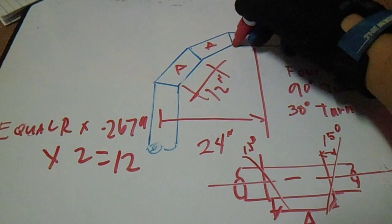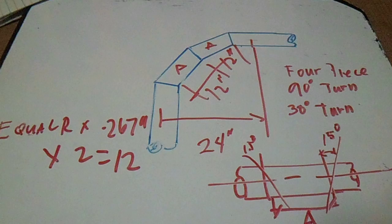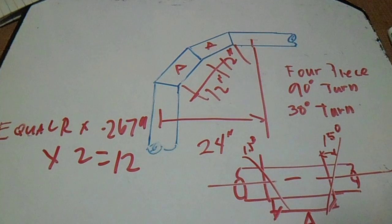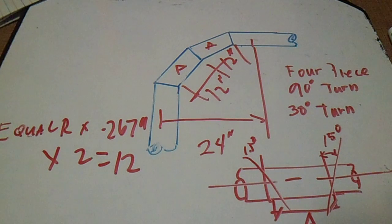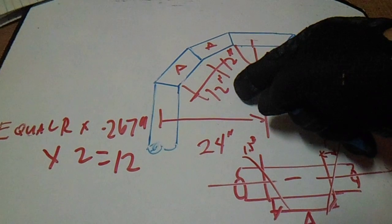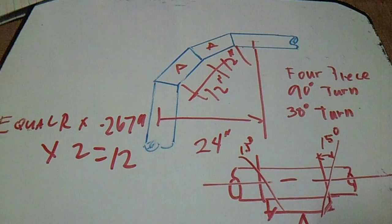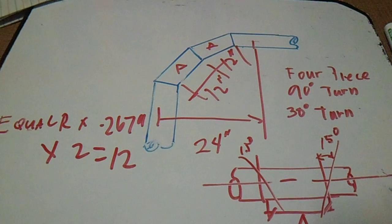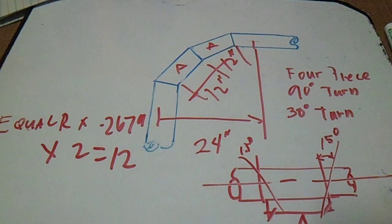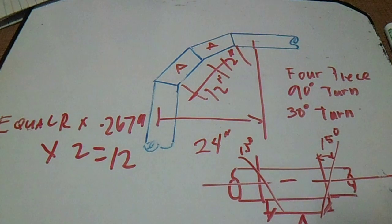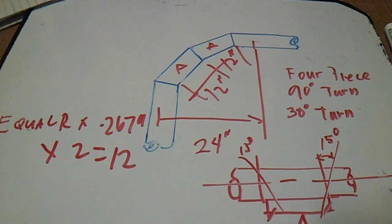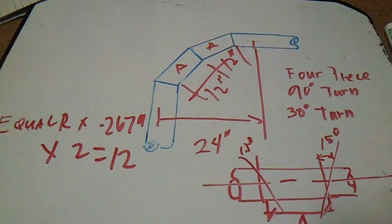So this is 12 inches and 12 inches — this is how to compute dimension A for a four-piece 90-degree turn with 30-degree turns and 15-degree cuts. Our dimension is 12.85 inches. For a three-piece 90-degree turn, we have 2 times 45 degrees, and one half of 45 is 22.5-degree cuts.